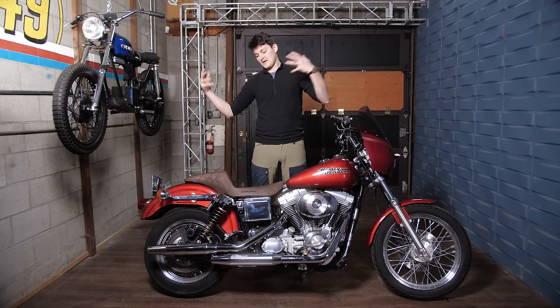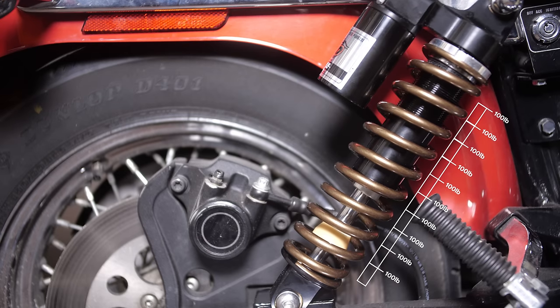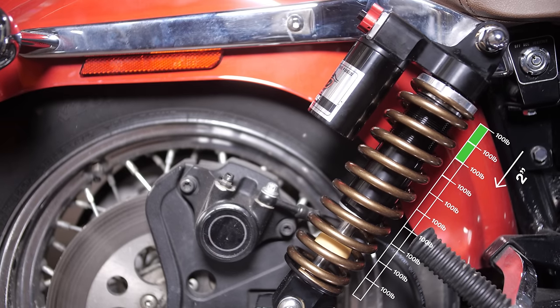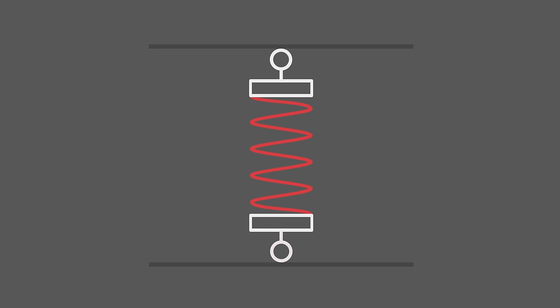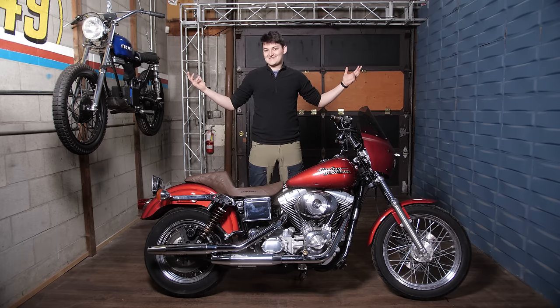Say my shock has a spring rate of 100 pounds per inch. Then my 200-pound ass compresses it two inches. Now, if I preload 100 pounds of tension into the spring, it will push back 100 pounds of my ass, leaving the other 100 to compress the spring one inch. Changing your bike's geometry is that simple.